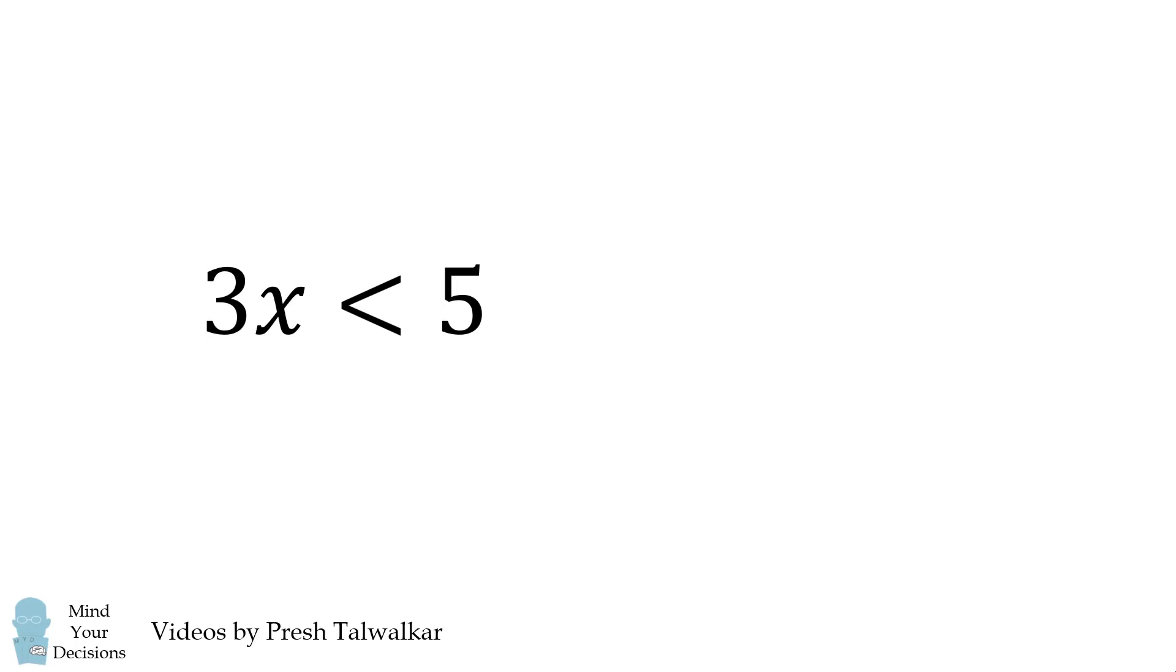We then divide both sides by 3, and get x is less than 5/3, which equals 1 and 2/3. This is an upper bound on x.